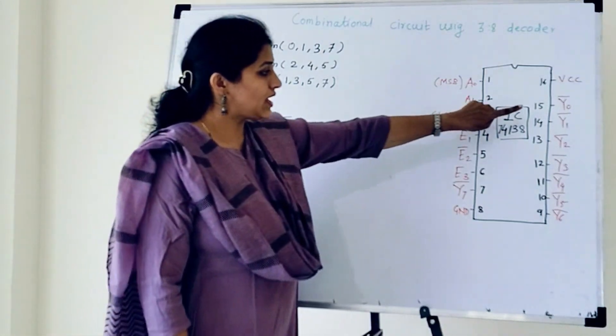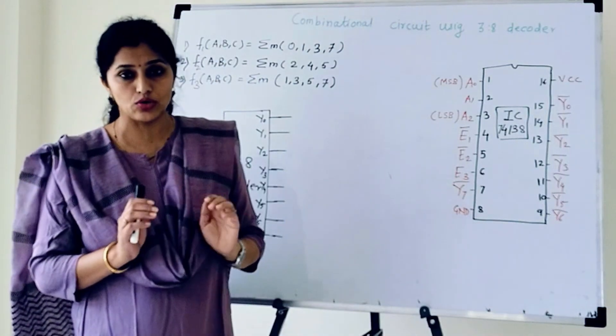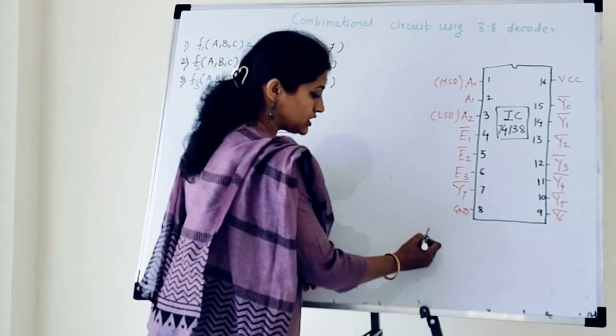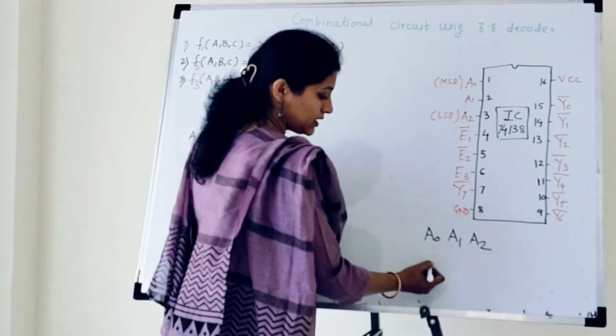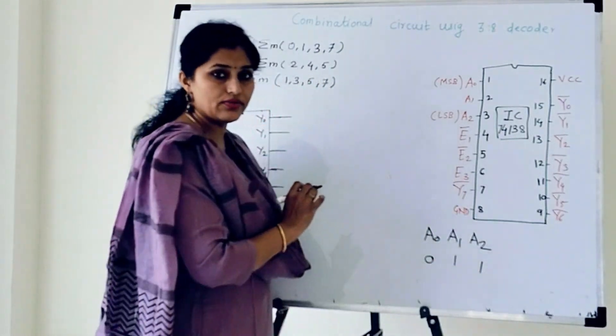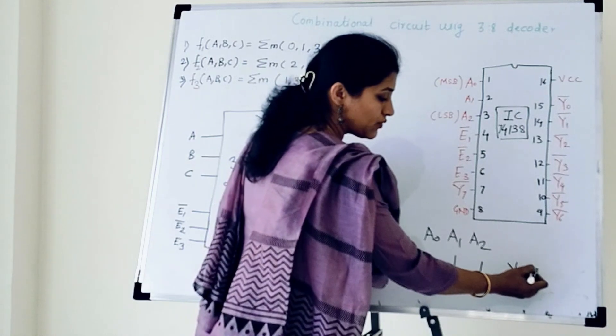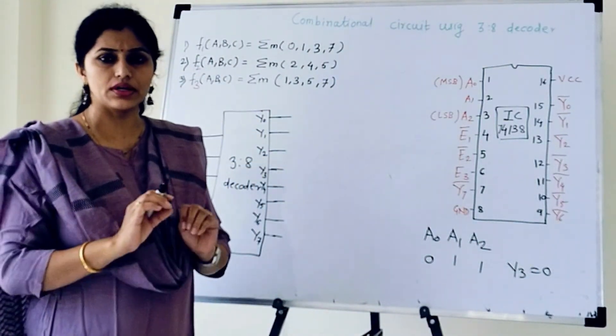Then here we have 8 outputs and all 8 outputs are active low outputs. It means if my select input A0, A1, A2 is 011, which means 3, so it will select Y3 and Y3 will become 0 whereas remaining outputs will remain 1.